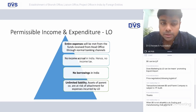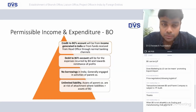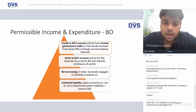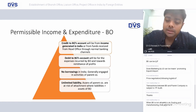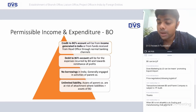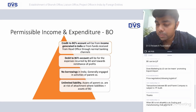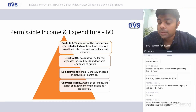For a liaison office, there is no income — entire expenditure must come from the parent — and a liaison office cannot borrow in India. For a branch office, income is generated in India or comes from head office funds, and a branch office also cannot borrow in India — it relies on the parent. On unlimited liability: this is a very significant risk. Whenever a foreign enterprise acts in India through a branch, the risk of exposing the foreign balance sheet to Indian obligations is very high. A subsidiary is a far safer option — even though it is more painful to set up and wind up — because it significantly limits liability and reduces risk.